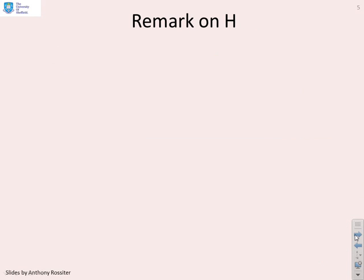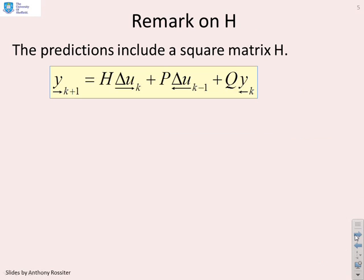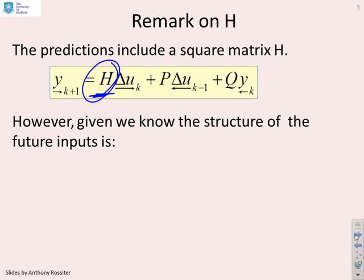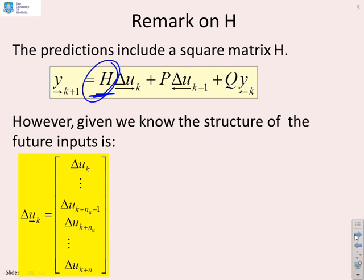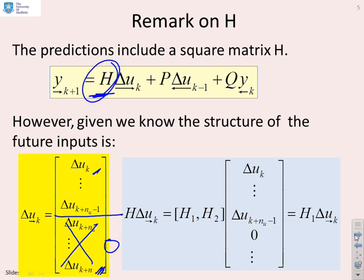We need to address the H matrix within the predictions. The predictions include a square matrix H multiplying delta_U_future, which is square because we've assumed a full set of future inputs. However, we're going to set the far future input increments to zero. We can rewrite H as [H1, H2], where H1 multiplies the first NU values of the input and H2 multiplies the zeros. Therefore, H times delta_U_future can be written as H1 times delta_U_future.